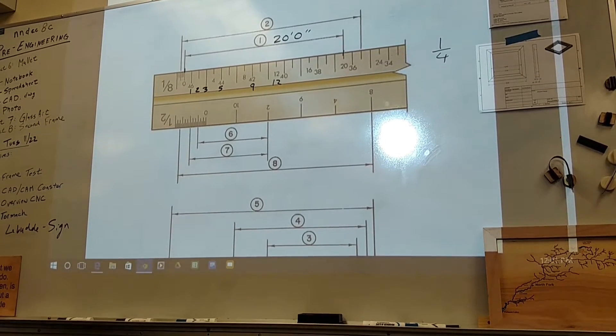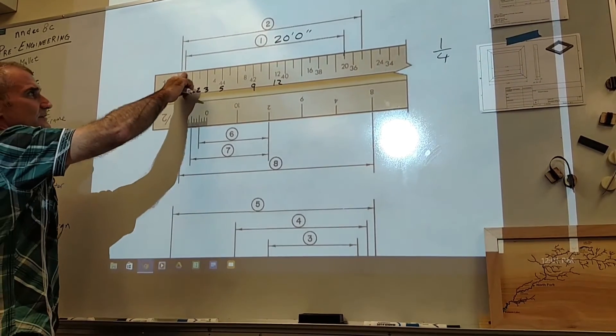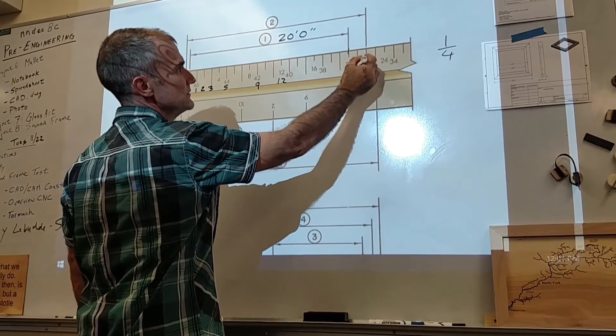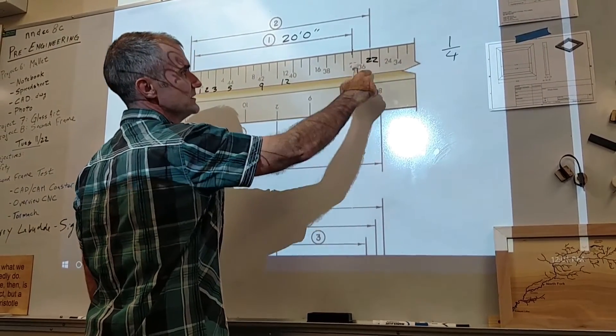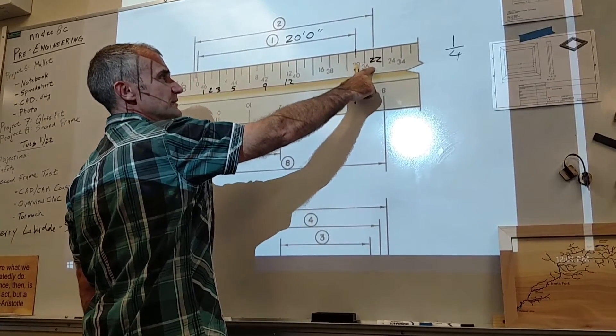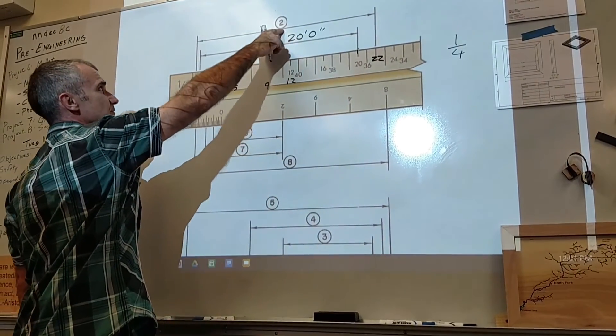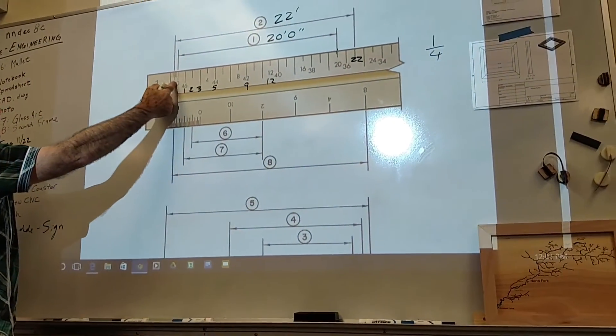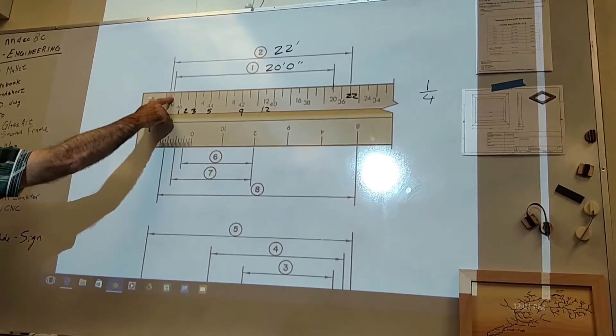Number two is a little harder. So number two, the first thing I note on number two is that I'm at twenty, one, two. So I'm at twenty-two feet, twenty-three, twenty-four. So that's twenty-two feet. So number two is twenty-two feet. And then I look to the left of the zero to five inches.